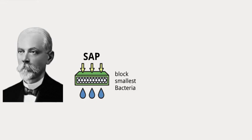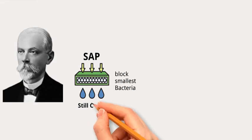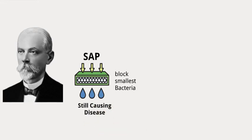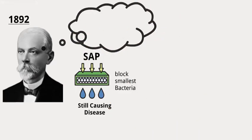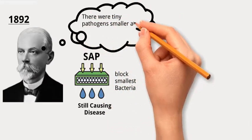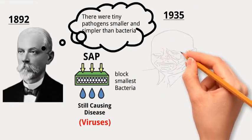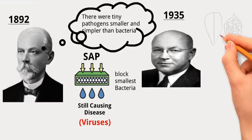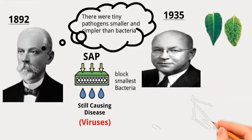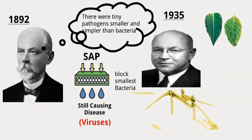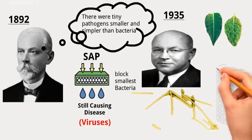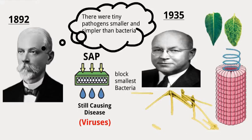To investigate further, Dmitry Ivanovsky, a Russian biologist, passed the sap through very fine filters that could block even the smallest bacteria. Surprisingly, the filtered sap still caused disease, leading Ivanovsky to propose in 1892 that there were tiny pathogens smaller and simpler than bacteria, which they called viruses. In 1935, Wendell Stanley found that the virus causing tobacco mosaic disease could form crystals and mistakenly thought it was a protein. In reality, this virus was a tiny rod-shaped particle consisting of a single RNA molecule surrounded by a protein shell.